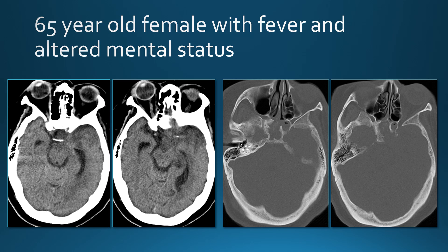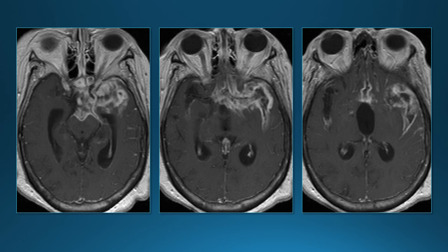First case: a 65-year-old woman with fever and altered mental status. On CT, the first thing we see is that the suprasellar cistern does not have normal density — it seems higher density than CSF. On bone windows, the sphenoid sinus is opacified and if we look carefully, the bone is eroded along the margin between the sphenoid sinus and the brain, potentially allowing infection to spread to the intracranial compartment. On MRI, we see leptomeningeal enhancement along the midbrain and the sylvian fissure, with some enhancement in the suprasellar cistern and probably also in the adjacent brain parenchyma.